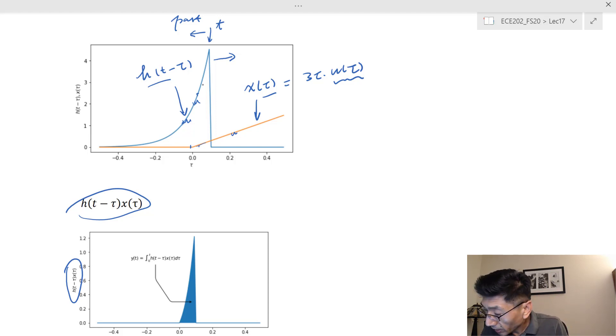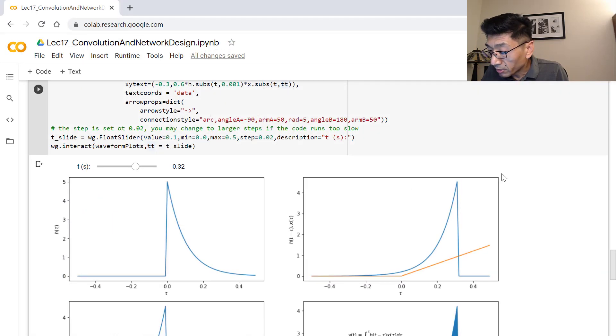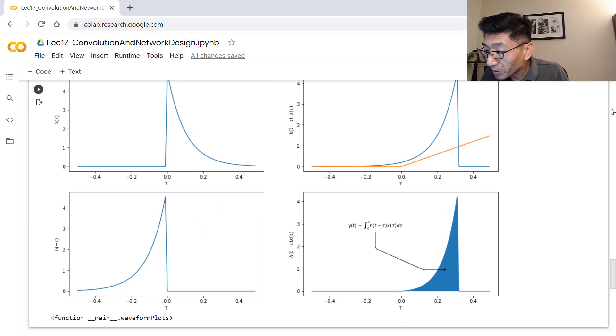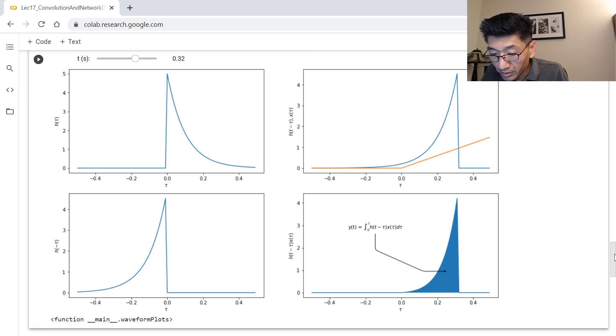I also have a Python code I wrote today. I hope we're going to be able to see this. Sometimes it won't run well. Let me see if I can get a little more area. So this is the waveform h, just a copy from here. And here, if I slide the time, we'll see the change in h.